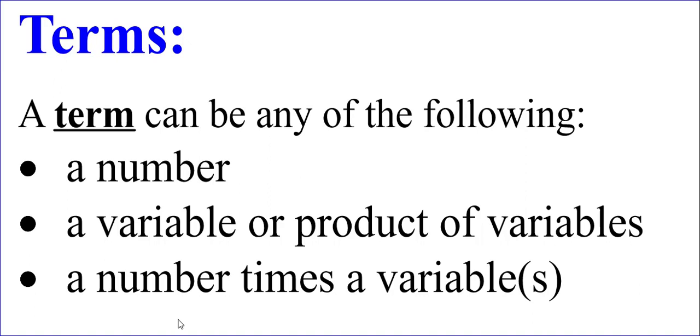Let's start with the word terms. A term can be any of the following: a term can be a number, a term could just be a variable or maybe variables multiplied to each other, hence the word product of variables. It could be a number times a variable or multiple variables.